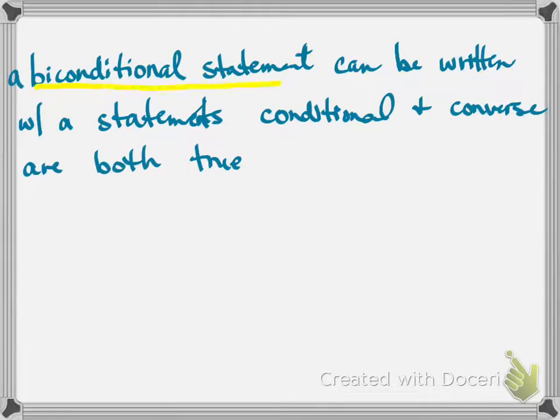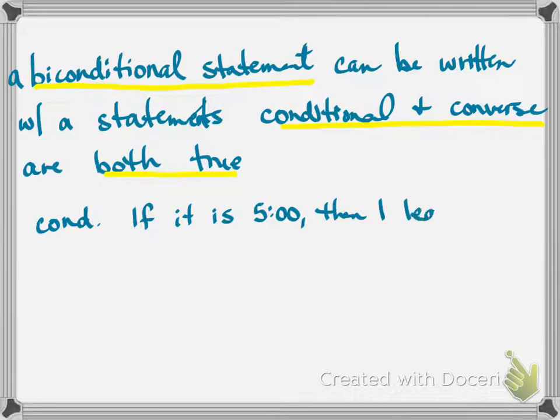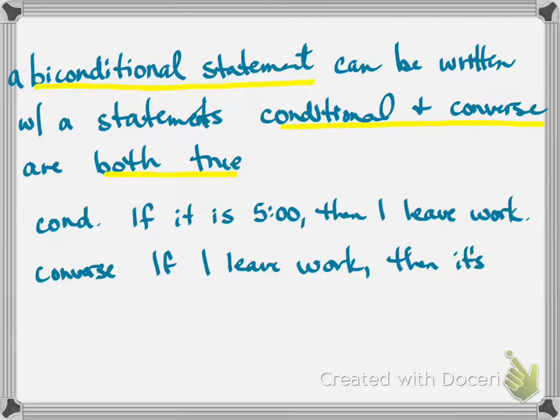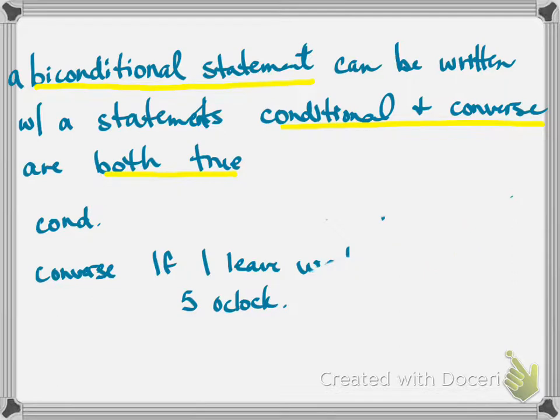Okay, last definition, biconditional statement. This statement can be written when the conditional and the converse are both true. If your conditional and your converse are both true, you can write it biconditional. So my conditional is going to be if it is 5 o'clock, then I leave work. My converse, which switches, says if I, this is not a good one. This isn't always true. If I leave work, then it's 5 o'clock. Neither one of those are really true. So that was a bad example.